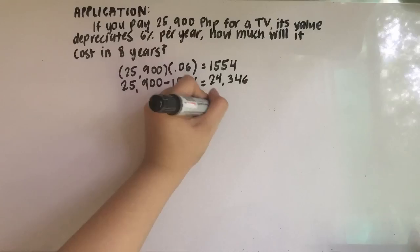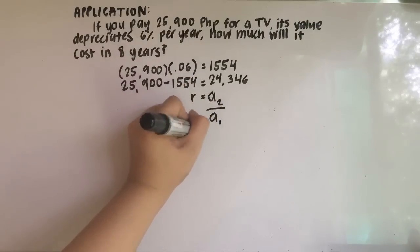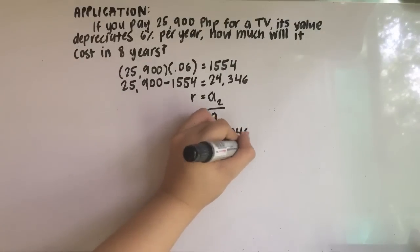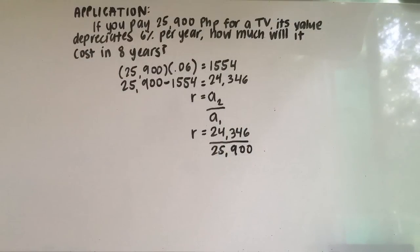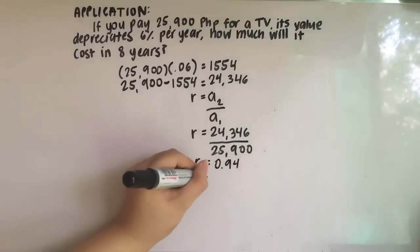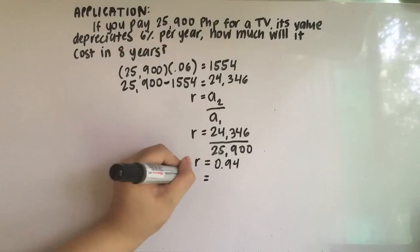Now we look for the common ratio. Since we have a sub 2, which is 24,346, and our a sub 1, which is 25,900, we divide the second term by the first term. 24,346 divided by 25,900 gives us 0.94 — our common ratio. Now that we have our common ratio, it will be easier for us to solve for the 8th term.